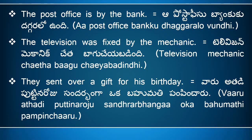'They sent over a gift for his birthday' means 'varu atadhi puttina roju sandar bhanga, oka bahumati pampin chaaru.' Here, 'they' means 'varu,' 'sent over' means 'pampin chaaru,' 'a' means 'oka,' 'gift' means 'bahumati.' 'For his birthday' means 'atadhi puttina roju sandar bhanga' — 'his' means 'atadhi,' 'birthday' means 'puttina roju.' So the full sentence is 'varu atadhi puttina roju sandar bhanga, oka bahumati pampin chaaru.'